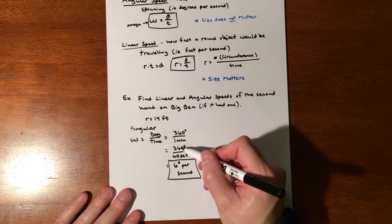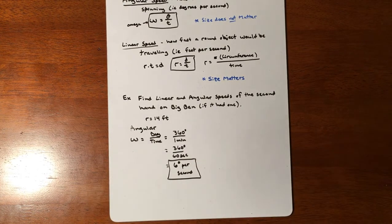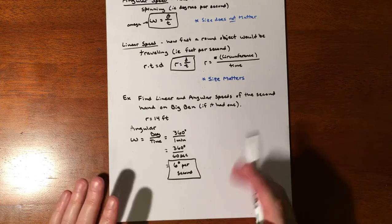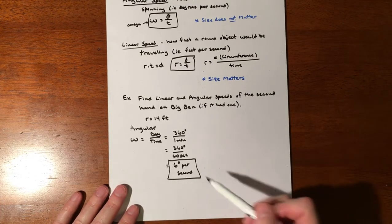If we wipe away the zeros, it's really just 36 divided by 6, so six degrees per second. The second hand on any kind of clock is six degrees per second.